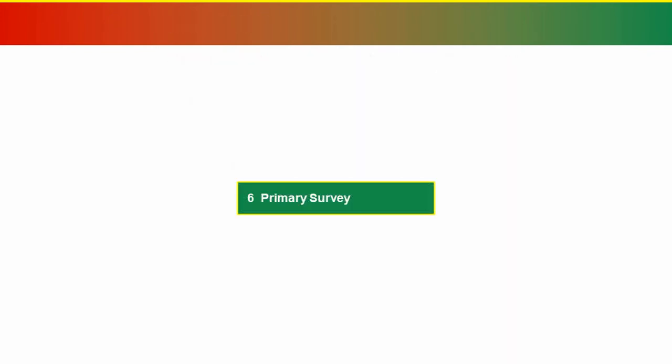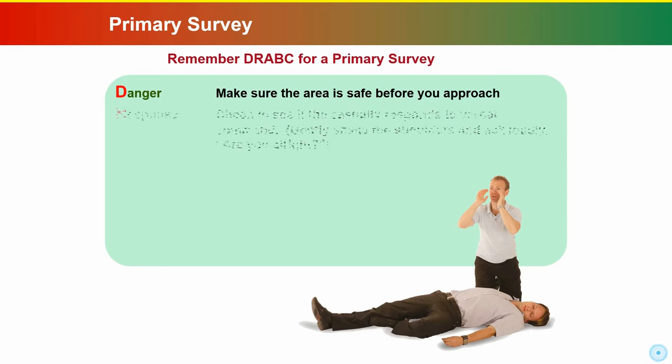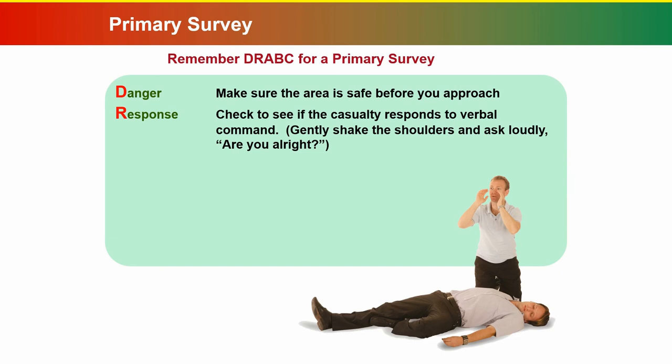So let's have a look at the primary survey. Remember DRABC, or Dr. ABC, for the primary survey. First of all, make sure the area is safe before you approach — D for Danger. R is Response: check to see if the casualty responds to verbal command. Gently shake the shoulders and ask loudly, 'Are you all right?' — the AVPU scale, if you like.